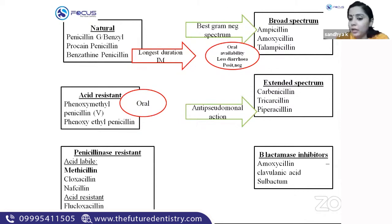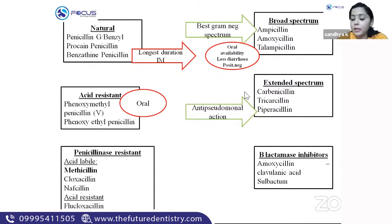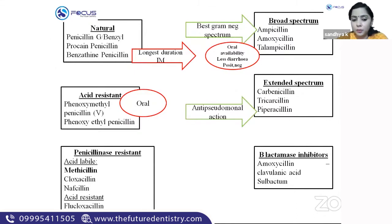Beta-lactamase inhibitor combinations: clavulanic acid is added to amoxicillin in order to extend the antibacterial spectrum.